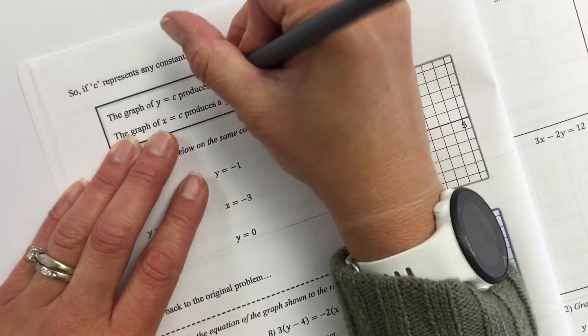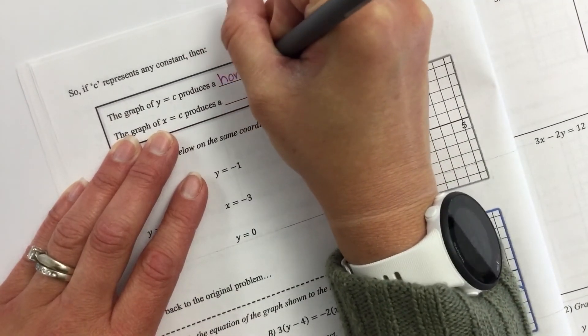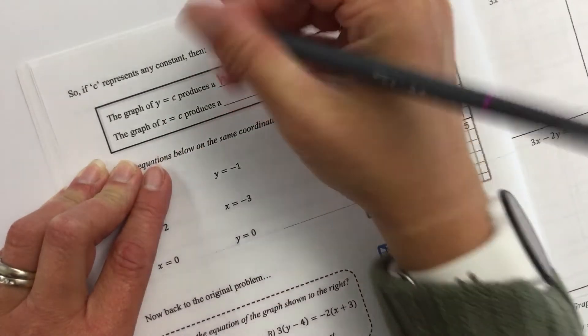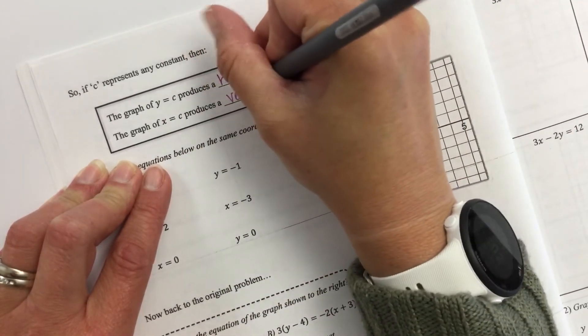So, we can say the graph of y = c produces, well, the y's, remember, are going to produce a horizontal line. And, the x's are going to produce a vertical. So, the y's are going to produce a horizontal line. And, the x of c produces a vertical.